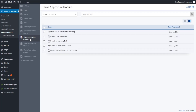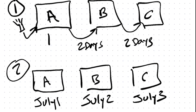The first thing you want to decide is which drip example you're going with: access to Module A on day one, Module B two days later, and Module C two days after that — or date-based access. I'm going to show you how to do both, but let's start with number one, where we give access on day one and it drips out after that.